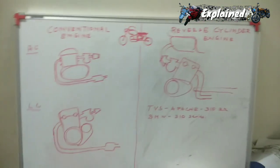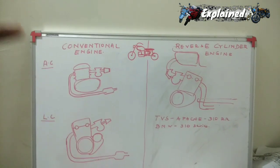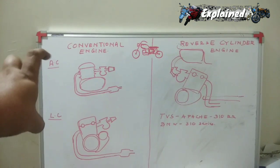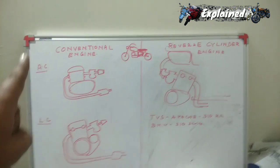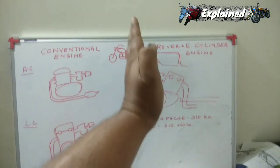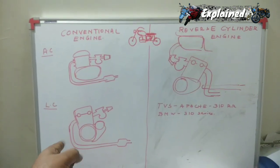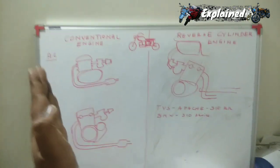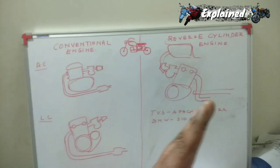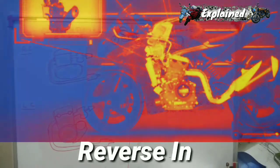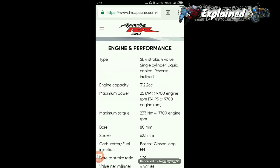In the BMW 310 series engine employed in the TVS Apache 310 RR, both major problems have been addressed. The cooling issue was solved using a liquid cooling mechanism with a radiator placed in front of the fuel supply unit. The space problem was solved by inclining the engine block towards the rear by certain degrees, which finally gave us the reverse inclined cylinder — the reverse inclined engine.